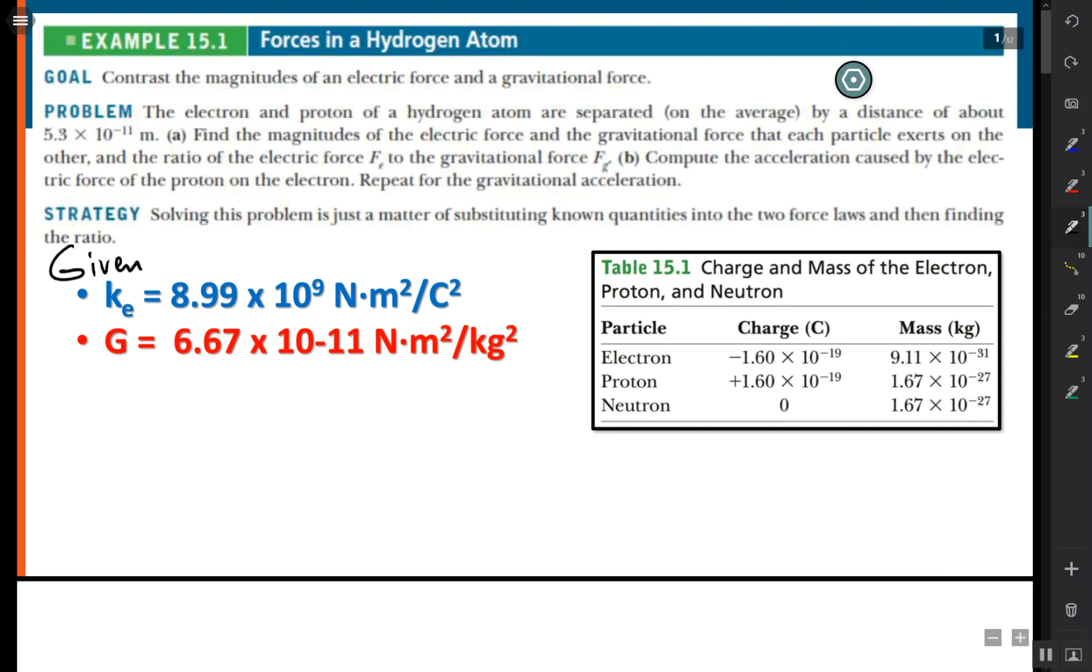If you notice I already copied some of the given that we'll need from previous slides like this table right here. It has both the charges which we'll need and the masses. We're not going to actually use the neutron one and these constants.